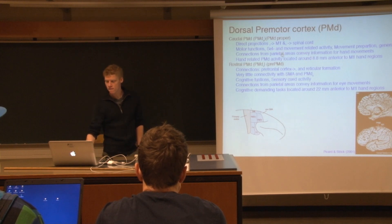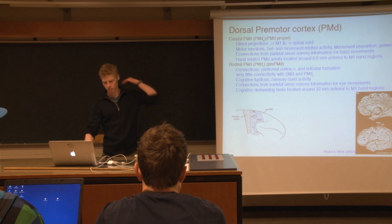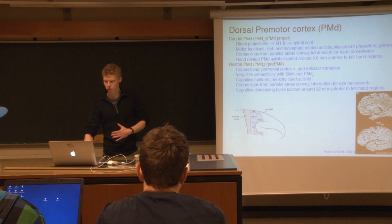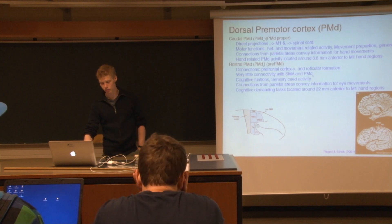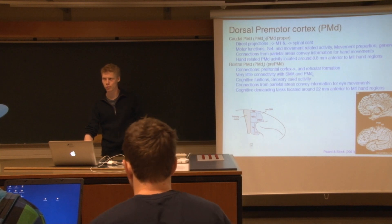Why was it named the dorsal premotor cortex? That's because it is located towards the back — that's the definition of dorsal. On the other hand, we have a ventral part of the premotor cortex, which is located more towards the belly, down here. This is from a monkey, and in monkeys the ventral premotor cortex is called F4 and F5. That's why it's called the dorsal premotor cortex.